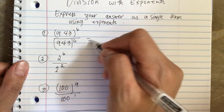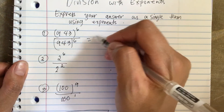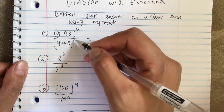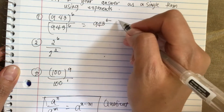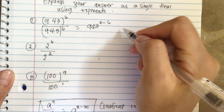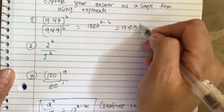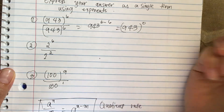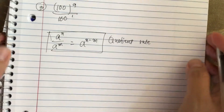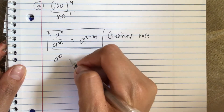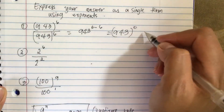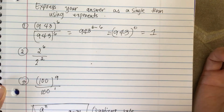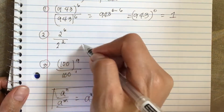Let's do number one. We have 943 to the sixth divided by 943 to the sixth. Applying the rule, we get 943 to the sixth minus six, which equals 943 to the zero. Now, we use another exponent rule: anything to the zero power equals one. So 943 to the zero power equals one.